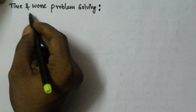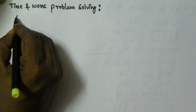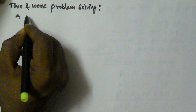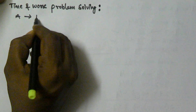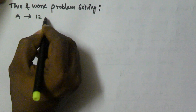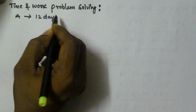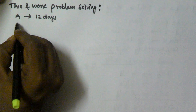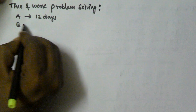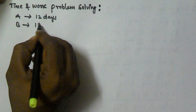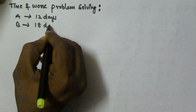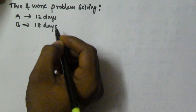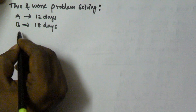To show you how to solve a problem related to time and work, let us consider person A finishes the given task in 12 days and person B takes 18 days to finish the same task.